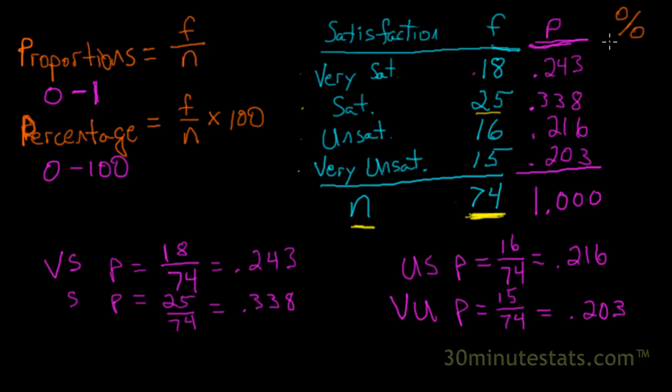We can do that then by taking each of these proportions that we've calculated and multiplying them by 100. And we can do that very simply by moving the decimal point two spaces to the right. So if we move the decimal point two spaces to the right, we get 24.3% of our sample was very satisfied.